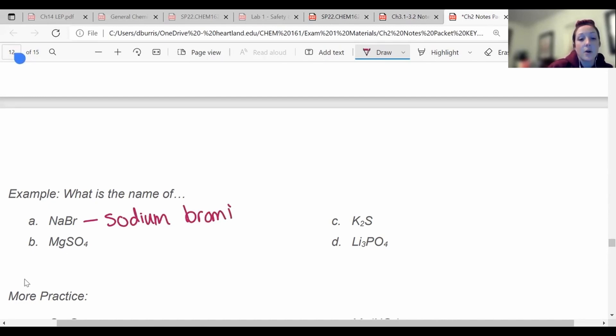And then the nonmetal is bromine. But instead of saying bromine, I'm changing the end to bromide. So this is sodium bromide. All right. I got K2S over here. K potassium is also an alkaline metal. So you better have your periodic table right next to you when you're doing this. It has a plus one charge always. So I can just write potassium sulfide. Change the ending to IDE.